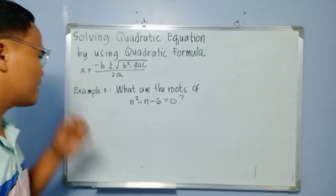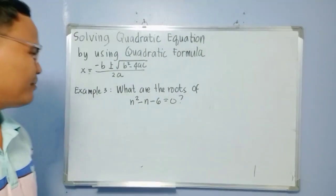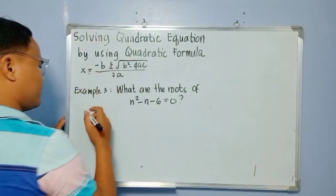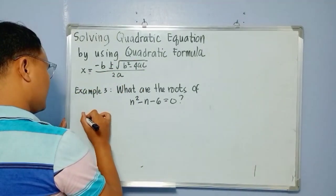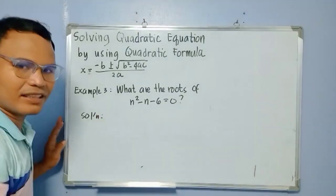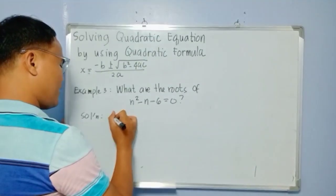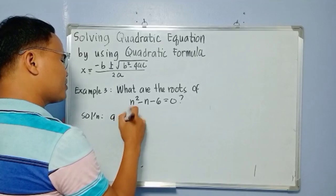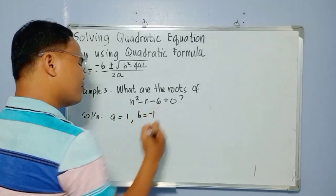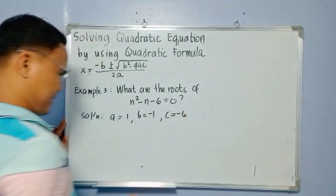Example number 3: What are the roots of n squared minus n minus 6 equals 0 by using the quadratic formula? Do not forget to identify the value of a, b, and c. The value of a is equal to 1, the value of b is negative 1, and the value of c is negative 6.